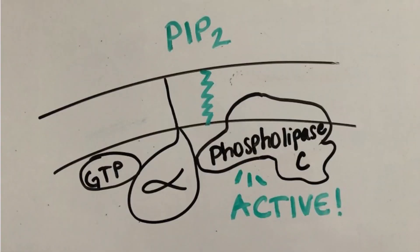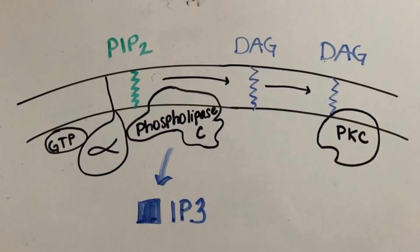Once the alpha subunit binds GTP, it will leave the beta-gamma subunit to activate phospholipase C. Phospholipase C metabolizes PIP2 into IP3, which moves into the cytoplasm, and DAG, which remains in the membrane.